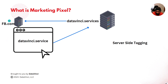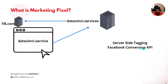Instead of sending the data from the client — the browser — to the marketing platform through a pixel, you are sending the data from the server to the marketing platform. That's server-side tagging. In the case of Facebook, this is called the Facebook Conversion API or Facebook CAPI — the server-side tagging mechanism for Facebook.